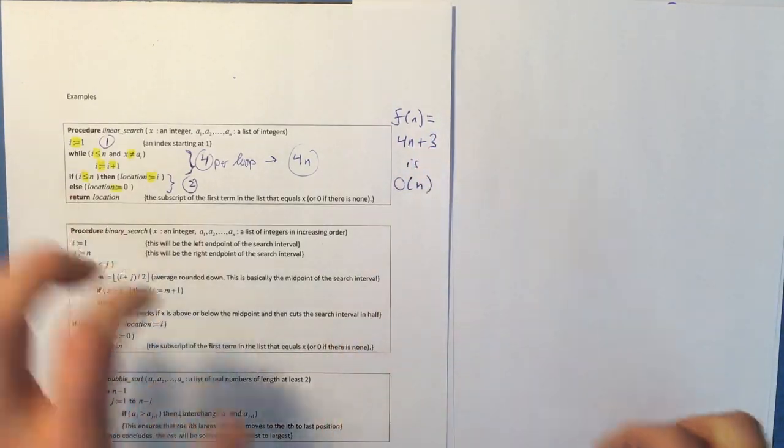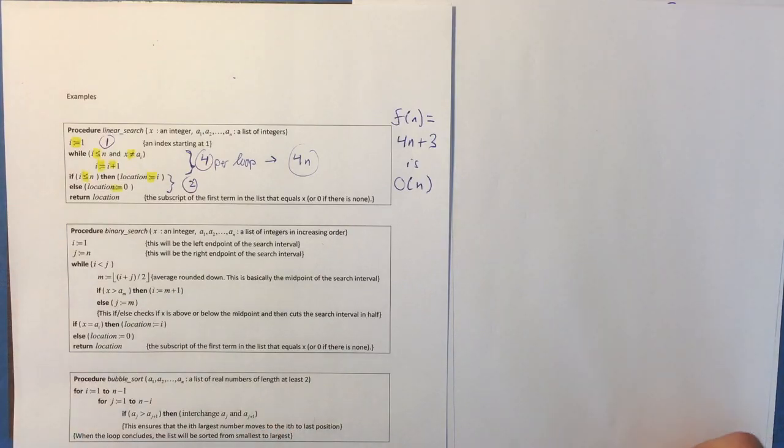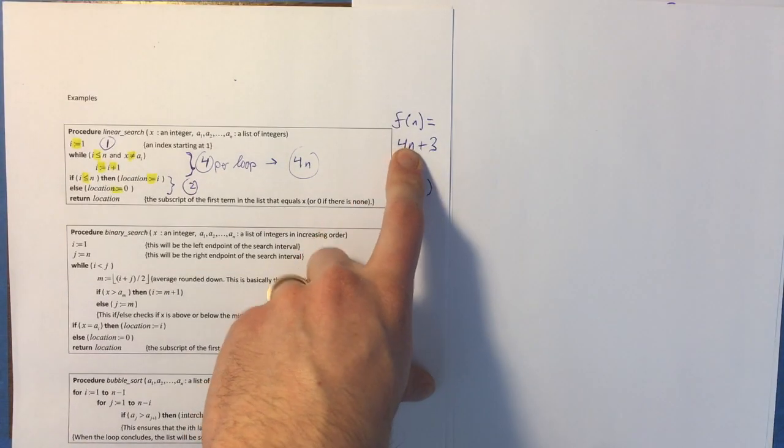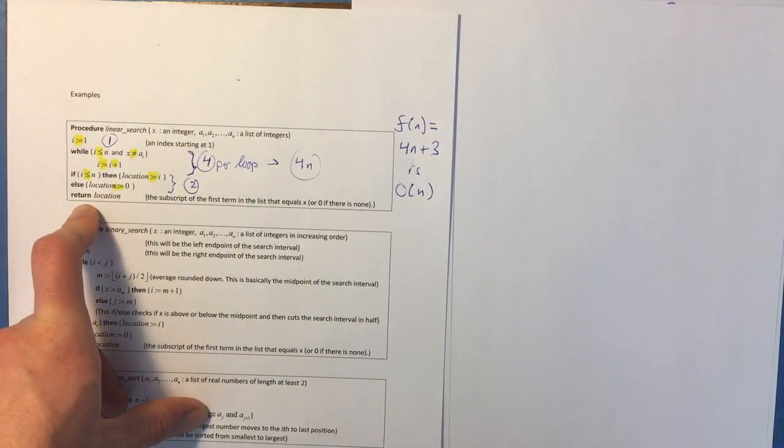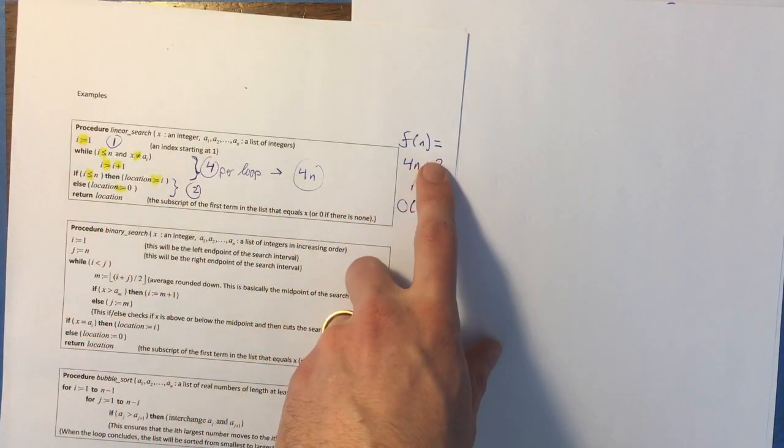And when we're measuring algorithmic complexity, we tend to care a little less about the actual function, which is why we don't care that much about constants. Like that's why I don't care that much about counting the return. If I count the return, this would be plus four.